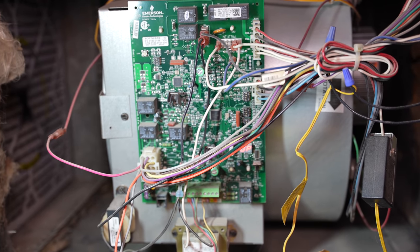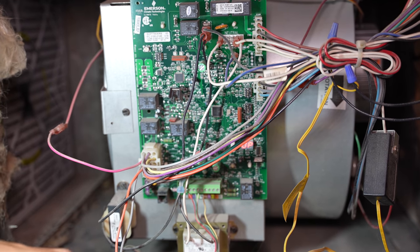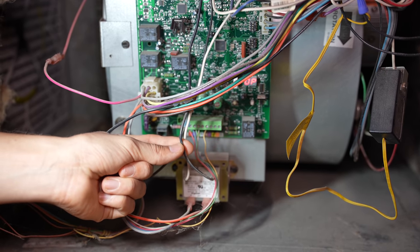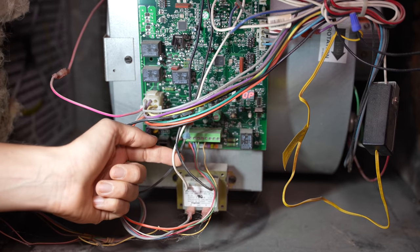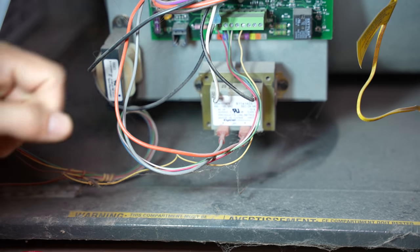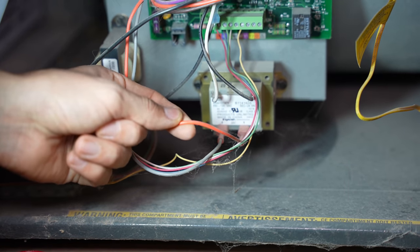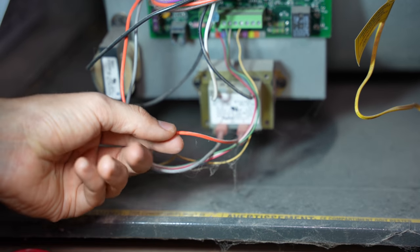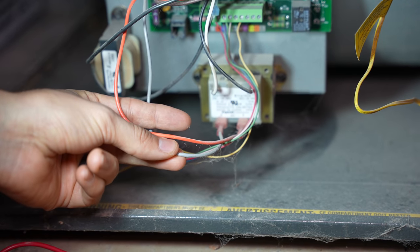In most cases, the easiest way to find the 24 volt common is to go right off of the transformer. Usually, the black and the white wires, that's going to be the 120 volts. Black being the hot, and the white being the common, or the neutral. And on the 24 volt side of the transformer, you have a red and a gray. Usually the red is going to be our hot wire, and then the gray is going to be the common.